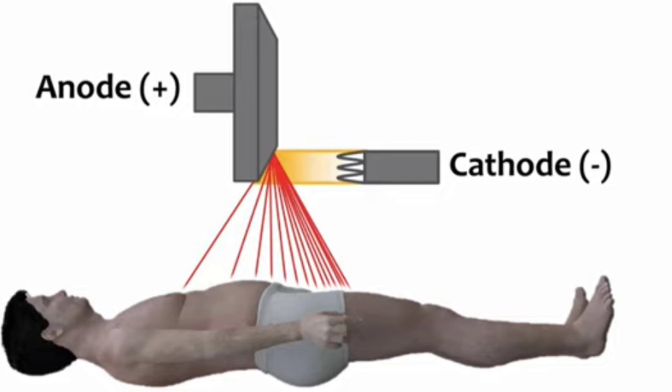If uniform density is achieved, then we can identify the density of our subject accurately, and the anode Heel Effect helps us use the density of our body appropriately.